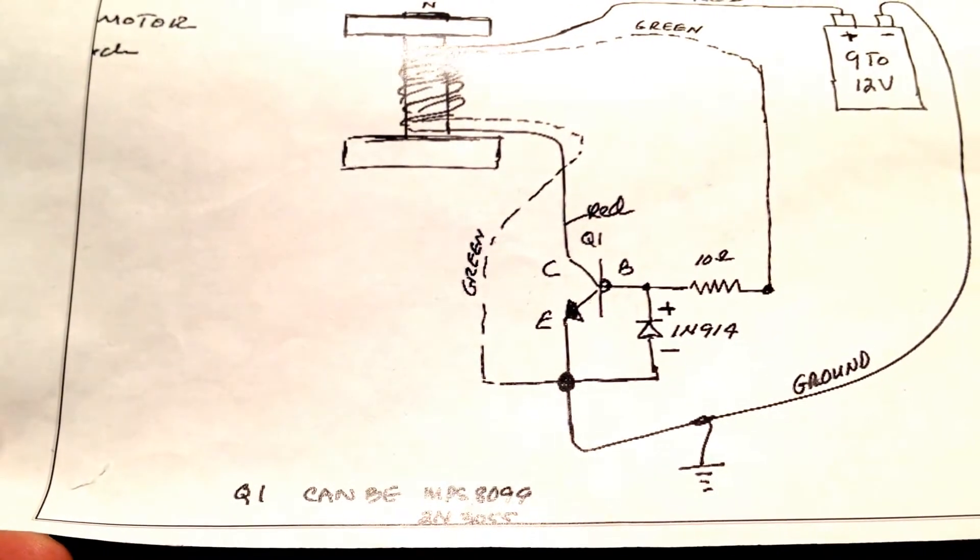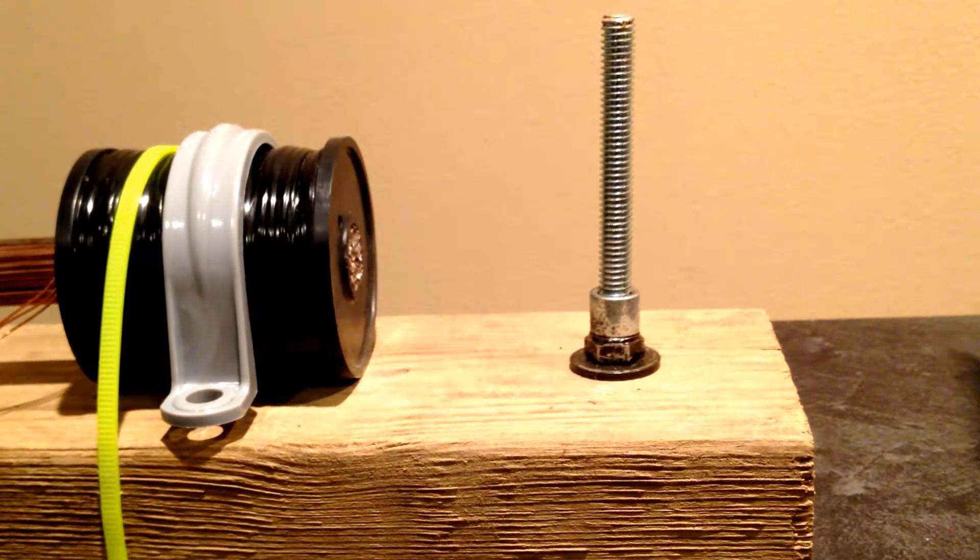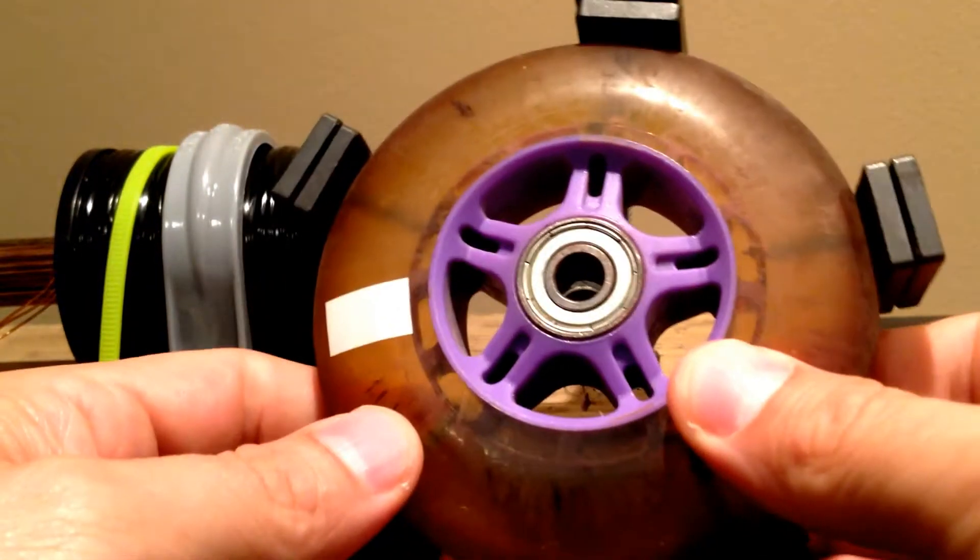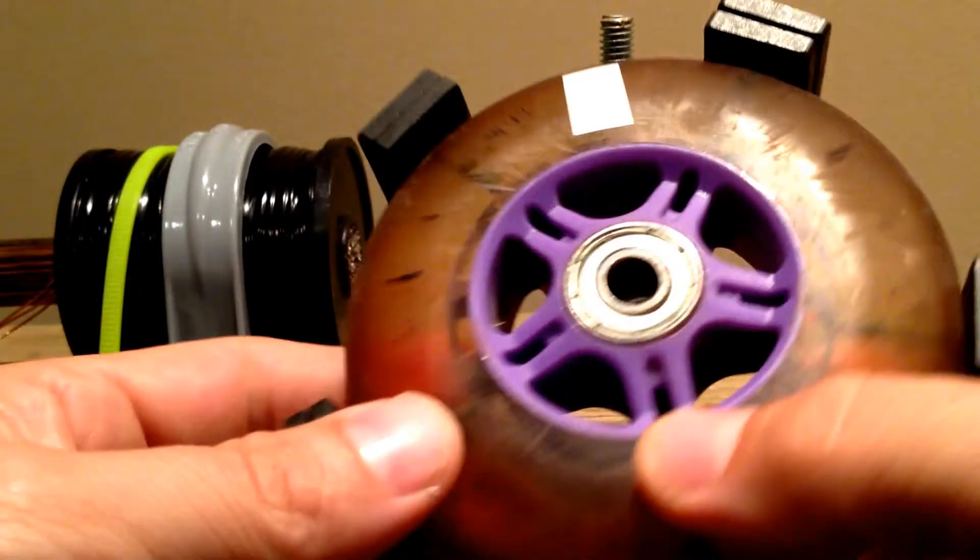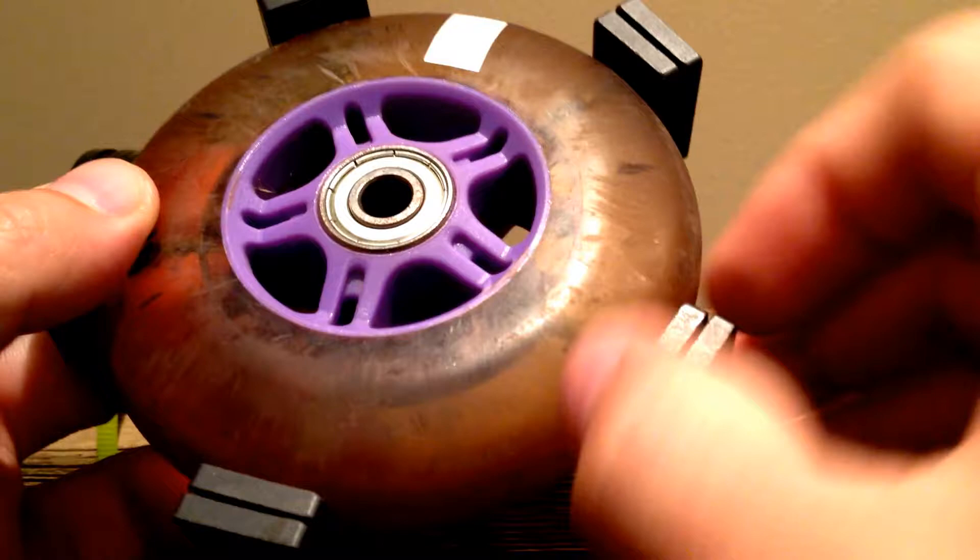Now I'm not going to go over the wheel too much. I mean obviously you can see that it's a scooter wheel. I bought these ceramic magnets at Radio Shack.